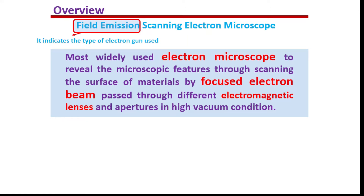The beam is passed through different electromagnetic lenses and apertures in high vacuum conditions. For better understanding, some key terms: in electron microscopy, a focused electron beam is used to visualize microscopic features. Electromagnetic lenses are not made of glass — they are made of metallic wire and function with changes in electric voltage. Apertures allow a portion of the electron beam to reach the specimen, and the total system must be in high vacuum conditions.